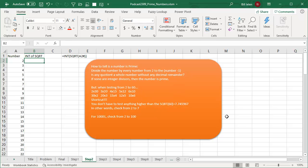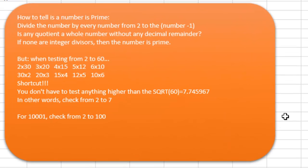Now, how to tell if a number's prime. You have to take that number and divide it by every number from 2 up to the number minus 1. Is any quotient a whole number without any decimal remainders? If you get anything where it is evenly divisible, then it's not prime. So you're looking for all of those quotients to have a non-zero remainder. Here's the shortcut for this.